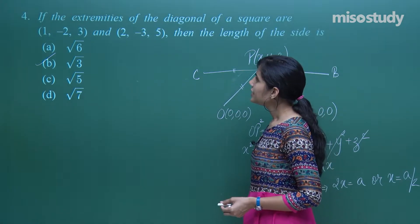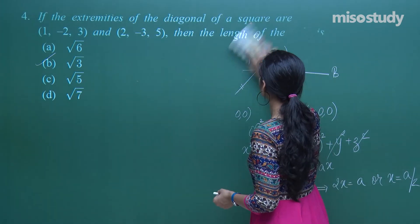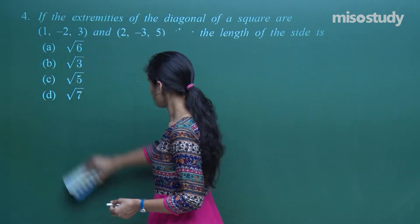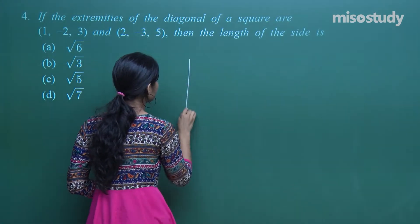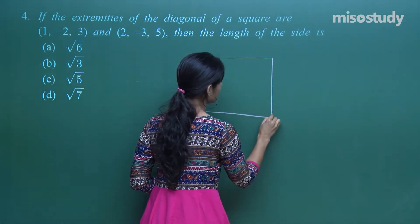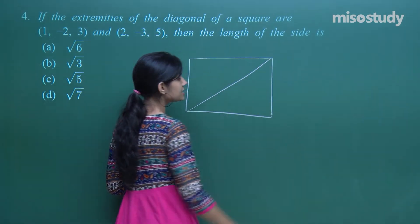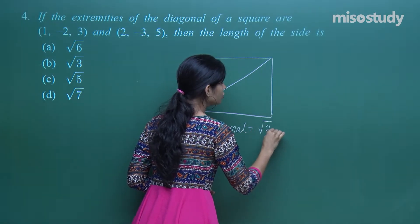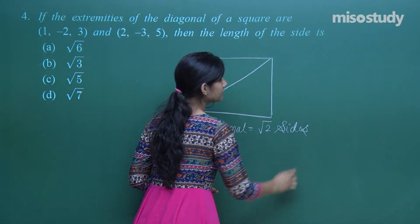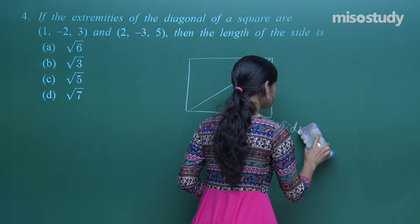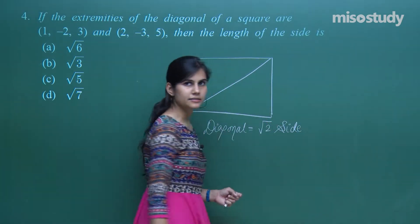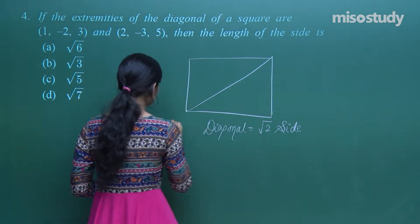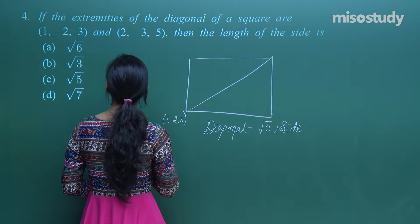The next question says: if the extremities of the diagonal of a square are given, what is the length of the side? For a square, the diagonal's length is √2 times the side length. The two extremities given are (1, −2, 3) and (2, −3, 5).